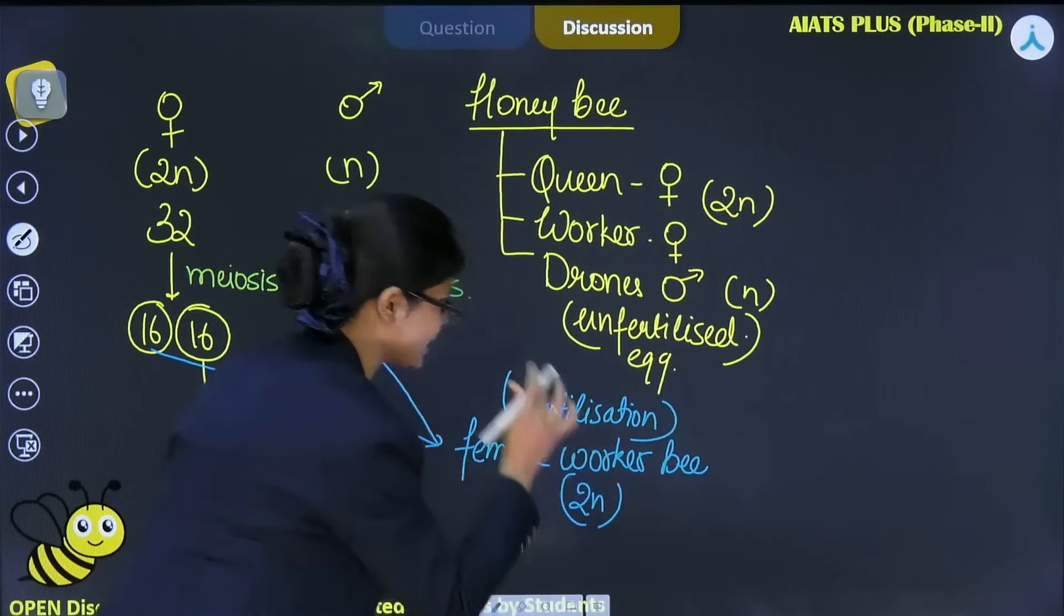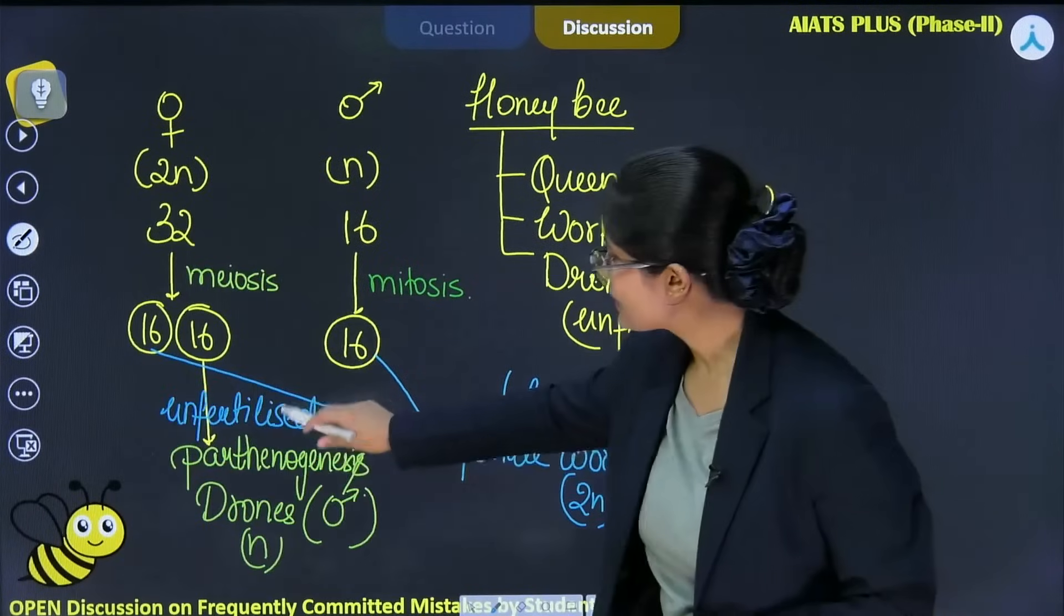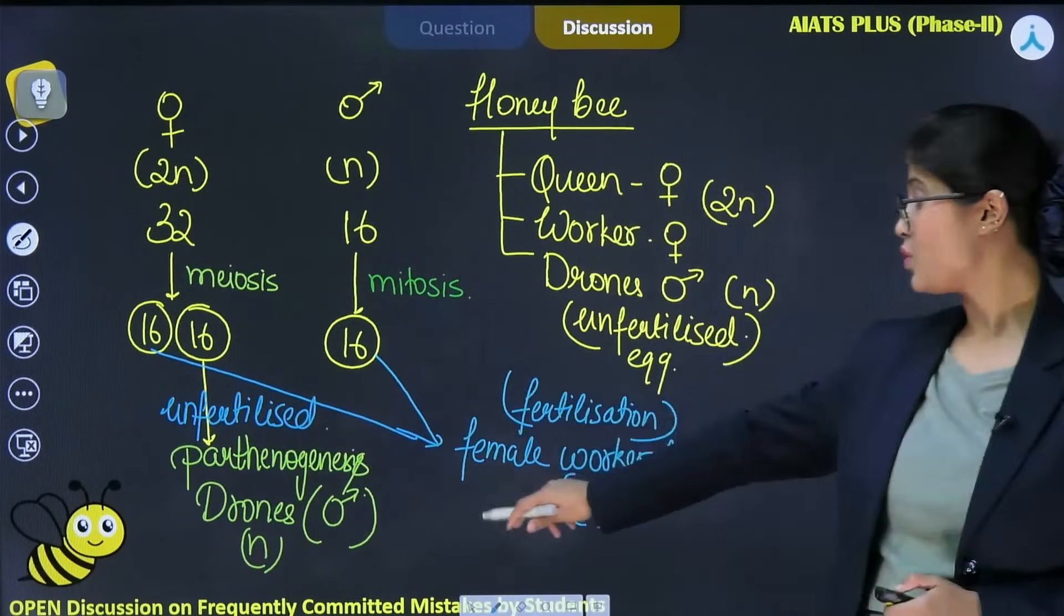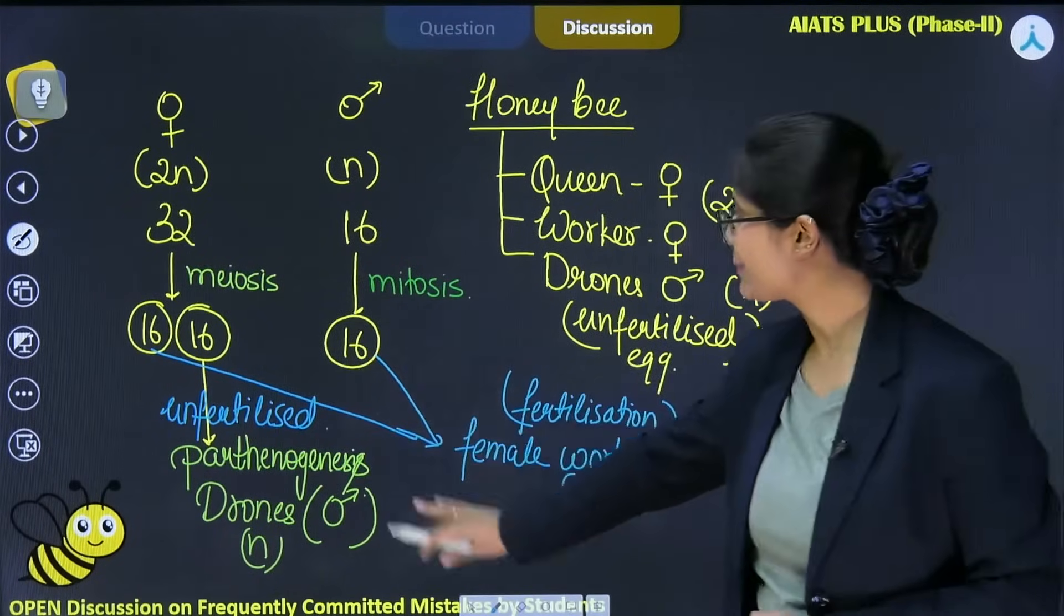This is really important again from exam point of view. Unfertilized egg will lead to the formation of drones which are sterile and they are haploid.